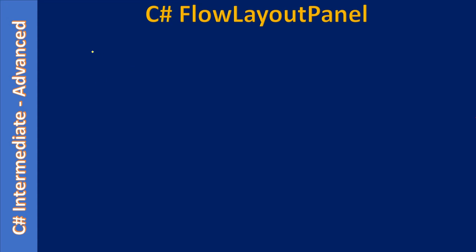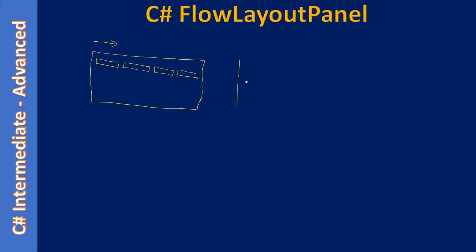Let's say we have a Windows Form with a FlowLayoutPanel and controls arranged from left to right. We have four controls, and let's say the user is resizing the form. When there is no room in the present row, a flow break happens and the third control moves to the next row, and then the fourth one goes after it.